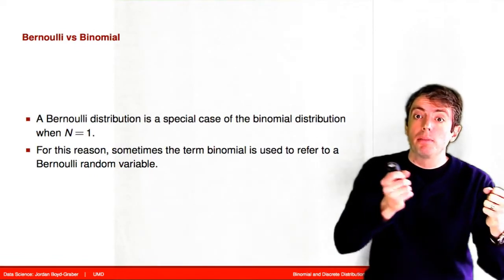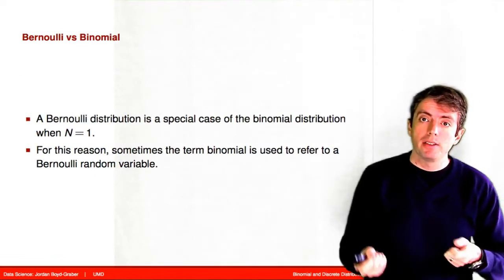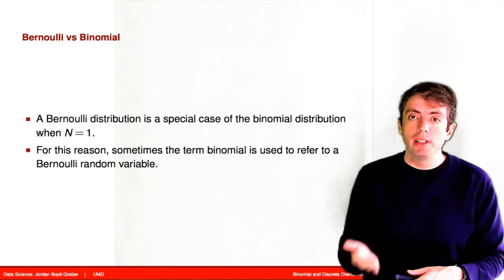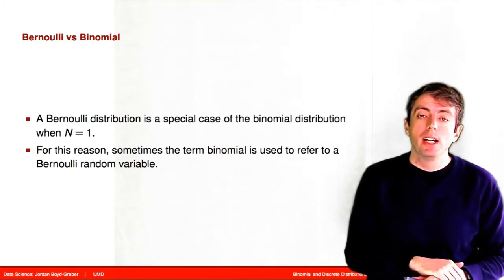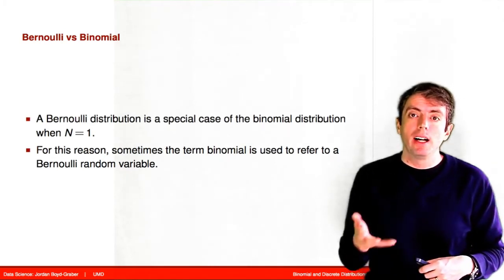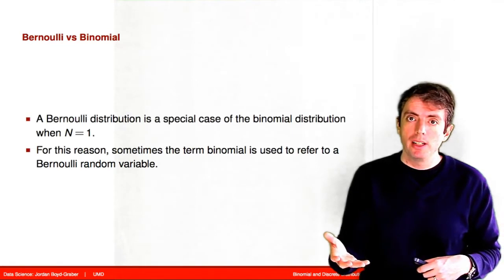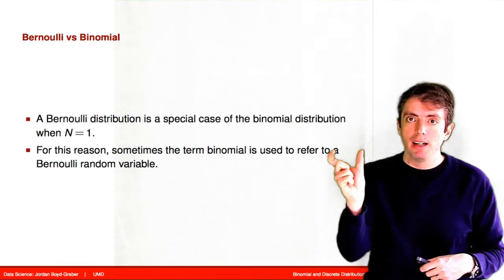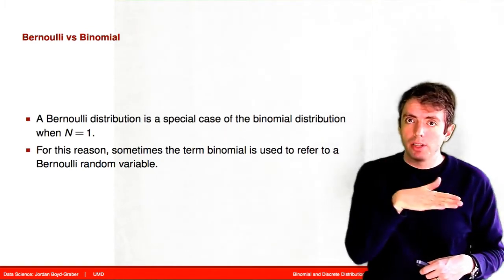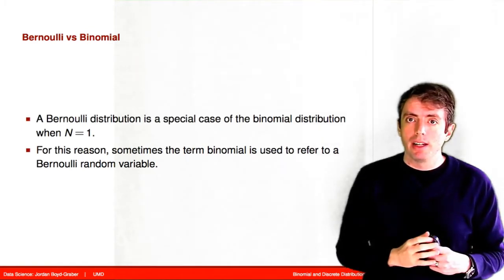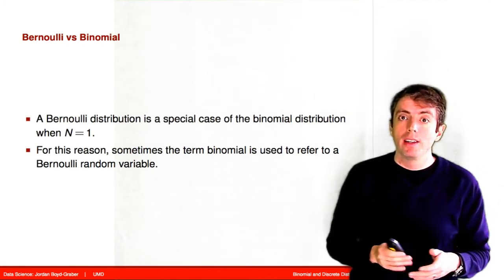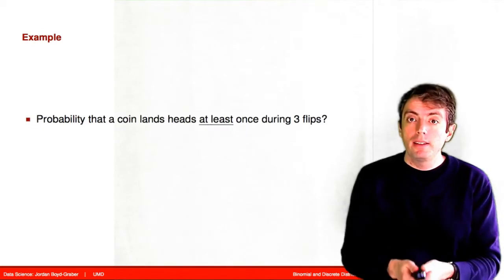Let's go back to the Bernoulli distribution and compare it to the binomial distribution. You should recognize that a Bernoulli distribution is just a special case of the binomial distribution where you only have one trial. If you only have one trial, you're at the top of Pascal's Triangle, so the binomial coefficient is always 1 — that term goes away — and all that you're left with is the same formula that we had for the Bernoulli distribution.